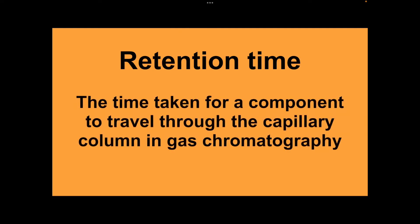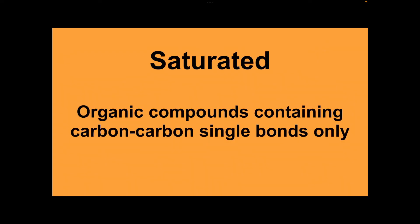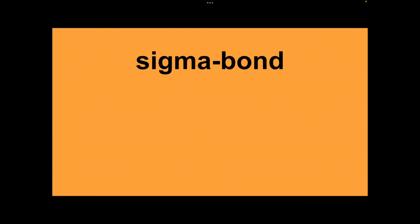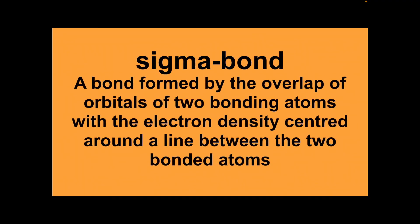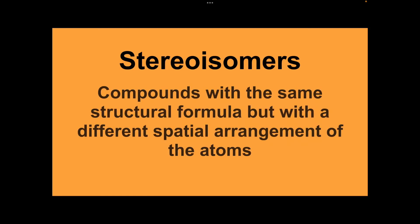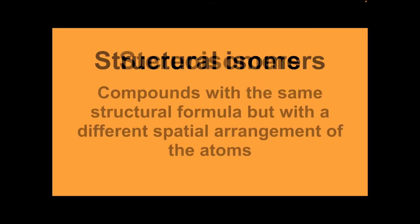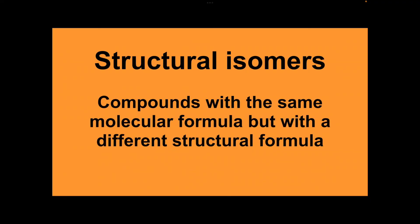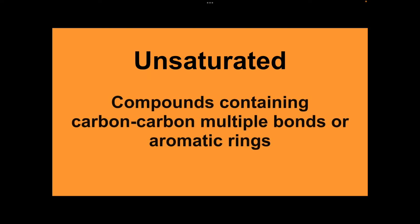Retention time: the time taken for a component to travel through the capillary column in gas chromatography. Saturated: organic compounds containing carbon-carbon single bonds only. Sigma bond: a bond formed by the overlap of orbitals of the two bonding atoms, with the electron density centred around a line between the two bonded atoms. Stereoisomers: compounds with the same structural formula but with a different spatial arrangement of the atoms. Structural isomers: compounds with the same molecular formula but with a different structural formula. And finally, unsaturated: compounds containing carbon-carbon multiple bonds or aromatic rings.